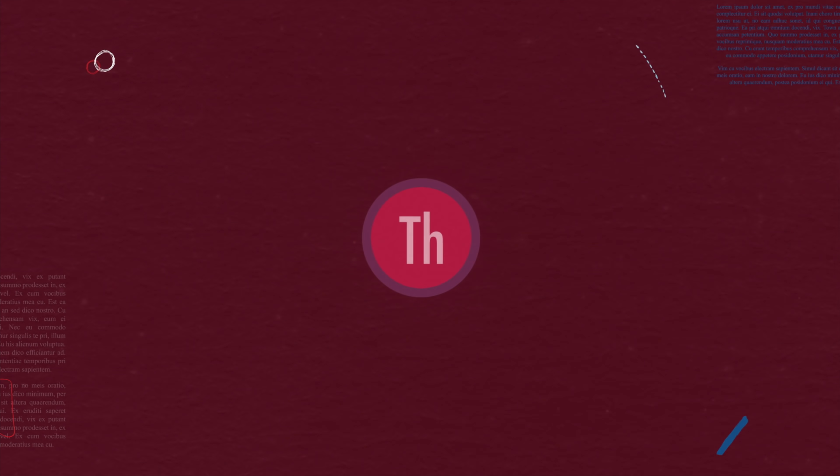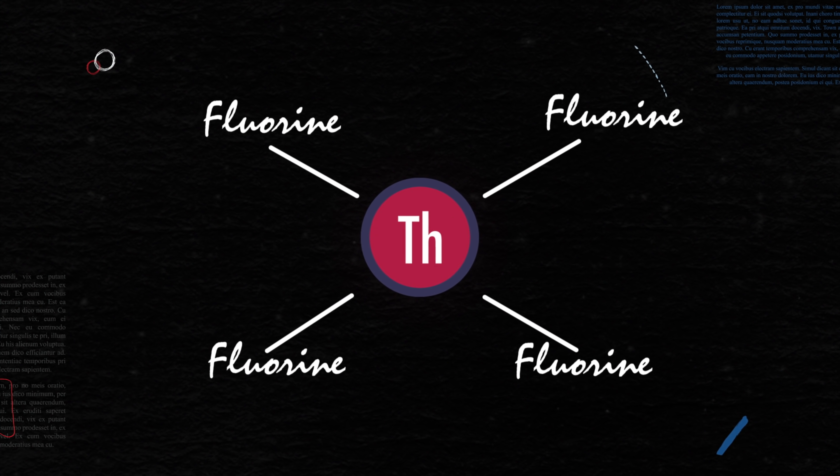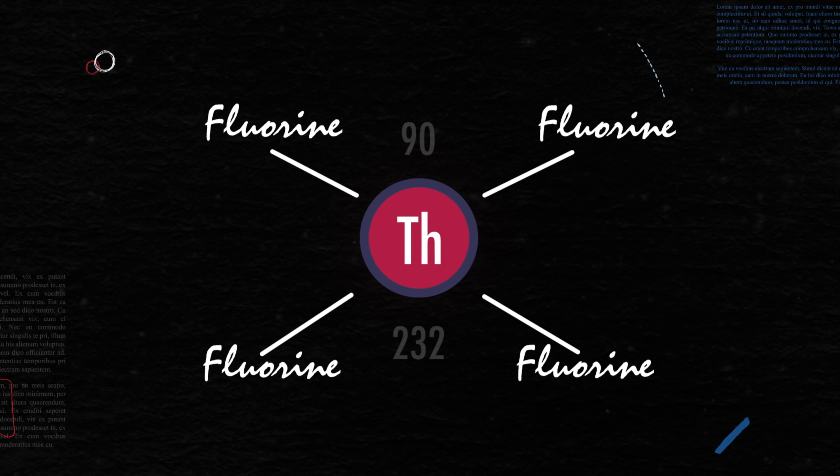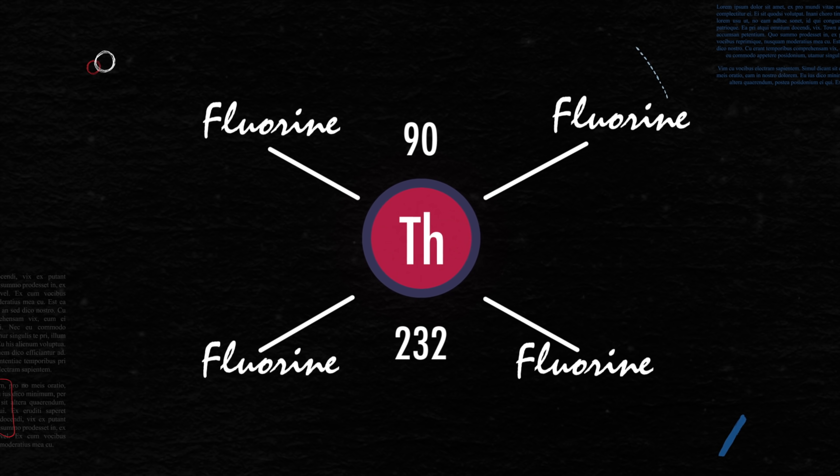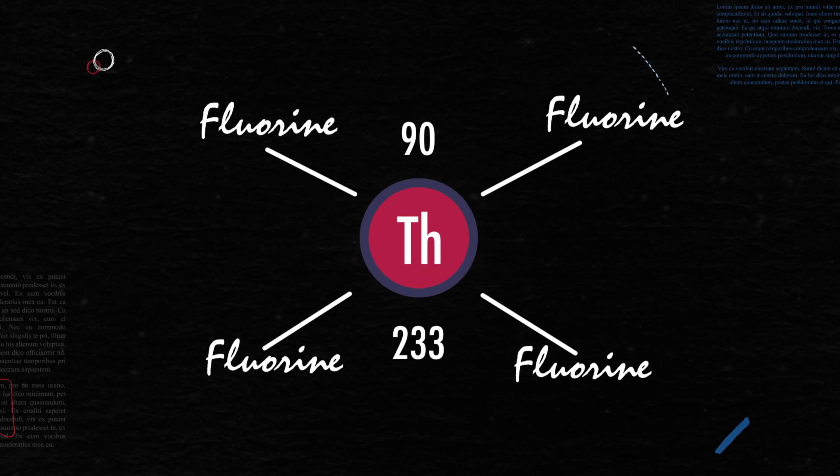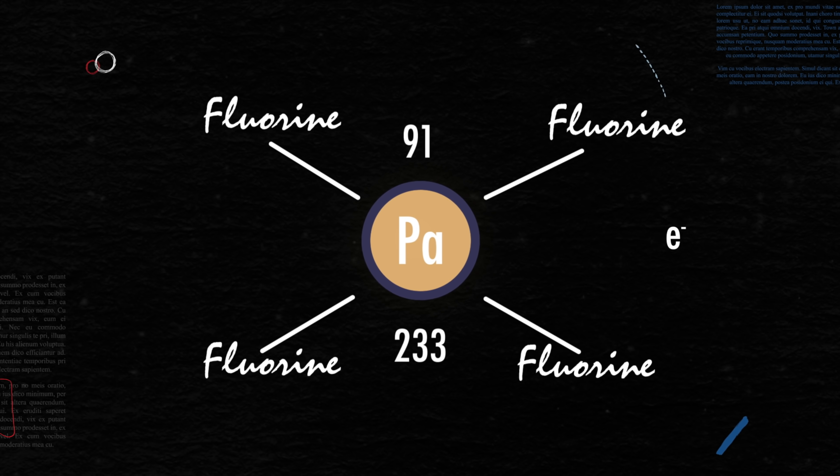It starts out in the blanket, dissolved in the molten salt, in the form of a tetrafluoride, meaning with four fluorine atoms. The blanket where it resides is subject to neutron flux coming from the reactor core. The thorium atom will absorb a neutron to become thorium-233. It's not very comfortable in this state, so it'll undergo a beta decay to turn into protactinium-233.